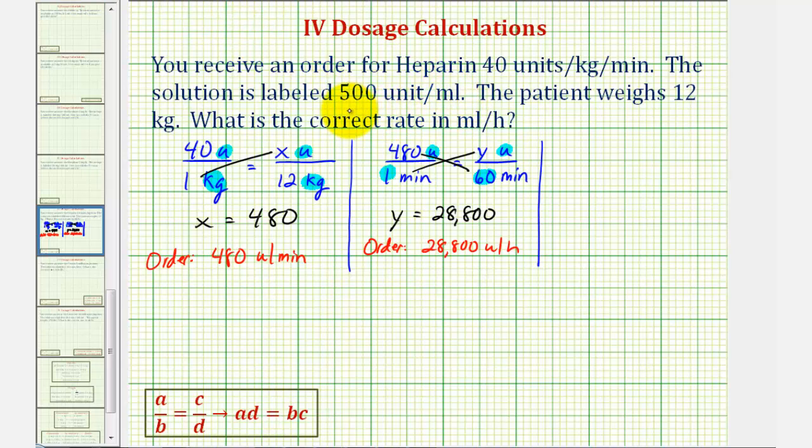We begin with the known rate of 500 units per milliliter. So 500 units is to one milliliter as 28,800 units is to an unknown number of milliliters. We'll call it z milliliters.